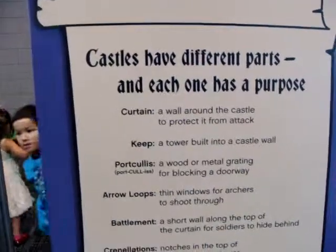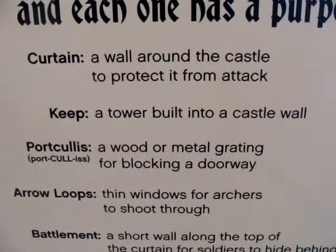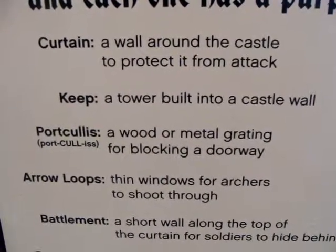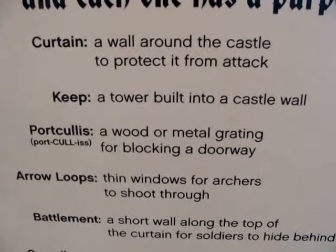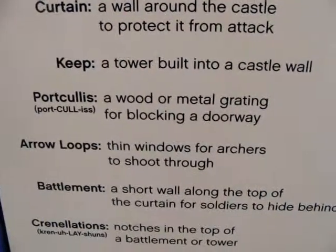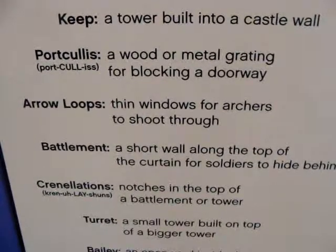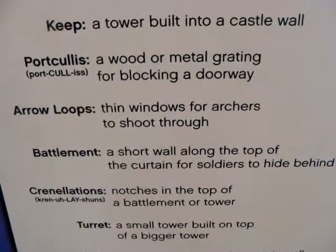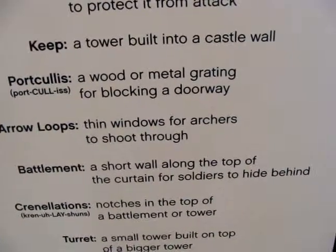The keep: a tower built into a castle wall. Portcullis: a wood or metal grating for blocking a doorway. Arrow loops: thin windows for archers to shoot through. Battlement: a short wall along the top of the curtain for soldiers to hide behind.